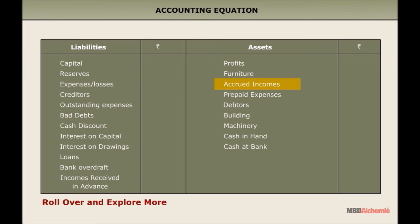Accrued incomes are outstanding incomes which have been earned but not yet received. Outstanding expenses are expenses which should have been paid but not yet paid. Prepaid expenses are expenses which have been paid in advance. Incomes received in advance are incomes which have been received in advance.